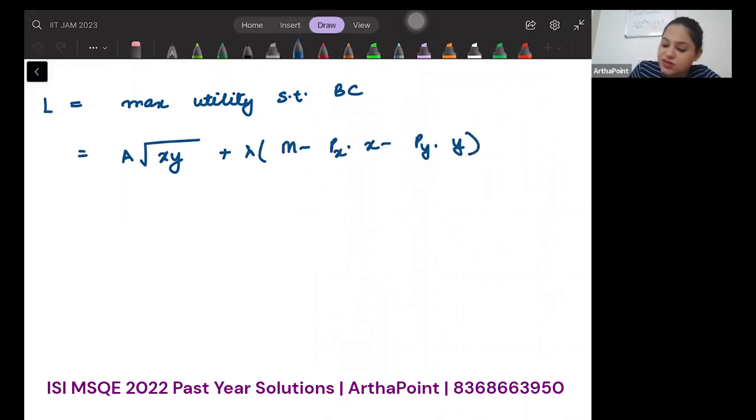So if I differentiate this with respect to x, I will get a√y · 1/(2√x) + λ·(-px) = 0. You could have done through third method also where you would have equated MRS to px/py. These are all synonymous. We have done it multiple times in class.